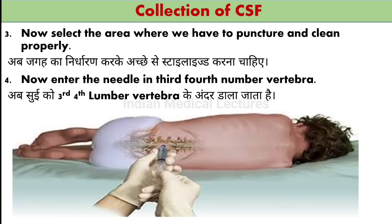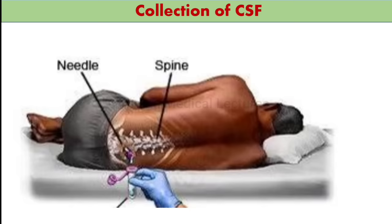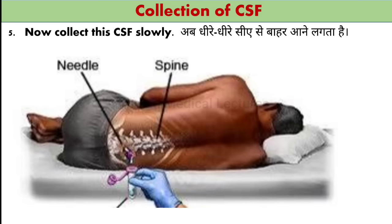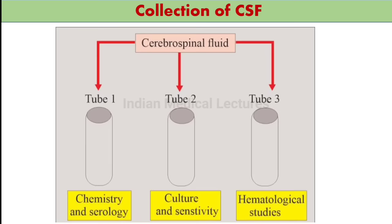The lumbar vertebrae are numbered 1, 2, 3, 4. We insert the needle between the 3rd and 4th lumbar vertebrae. This is very important — remember that CSF is collected from the 3rd–4th lumbar vertebra. When the needle is inserted in the middle, a white-colored fluid comes out. We collect this fluid in 3 tubes: Tube 1, Tube 2, Tube 3. The first tube goes to the chemistry lab, the last tube for hematology, and the remaining for culture. These 3 containers are used for different testing purposes.